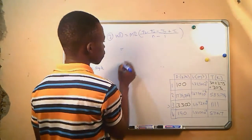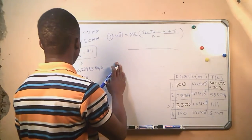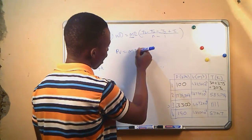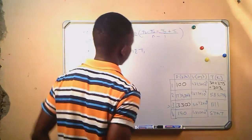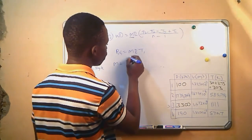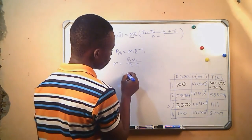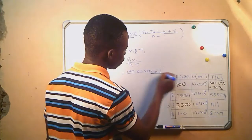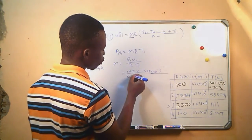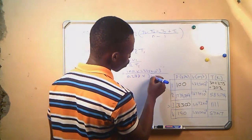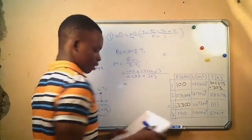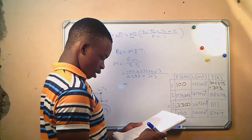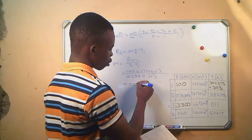Work done with the same polytropic index equals MR times (T3 minus T4 minus T2 plus T1) divided by index minus 1. We do not have M, so we calculate it first using PV equals MRT. M equals P1 V1 divided by R T1, which is 100 times 1.325 times 10 to the negative 3, divided by 0.288 times 303, giving M equals 0.00152 kg.